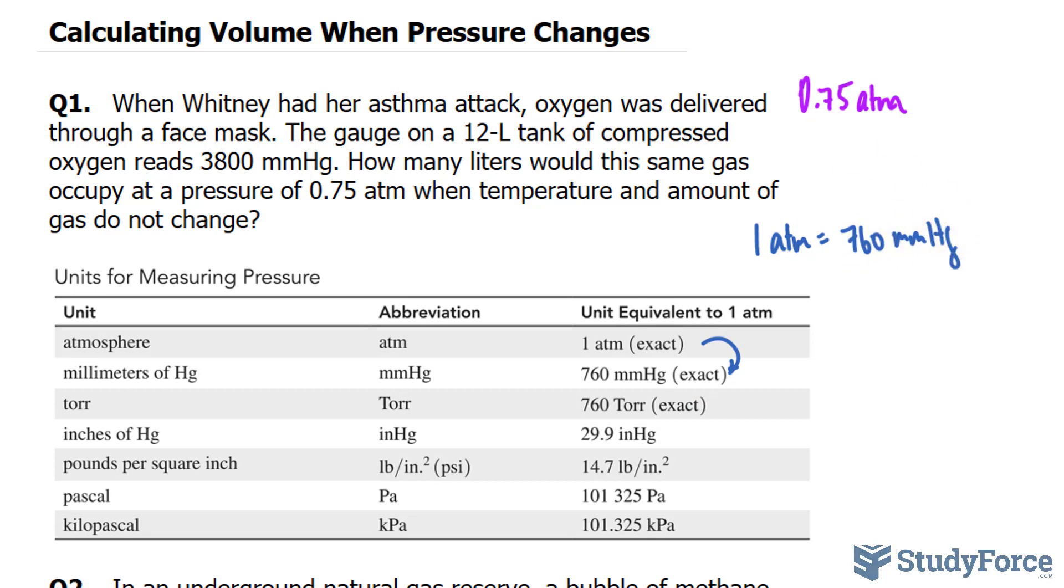From here, what I'll do is rearrange this conversion ratio so that I have 760 mmHg at the top and one atmosphere at the bottom. Because by writing it like this and then multiplying it to 0.75 atm, look what happens. The atmosphere unit and this atmosphere unit cancel out, leaving you with mmHg, which is what you need.